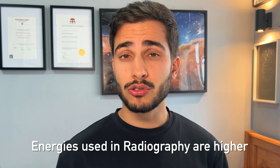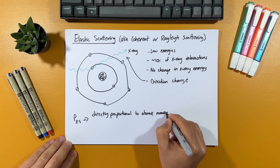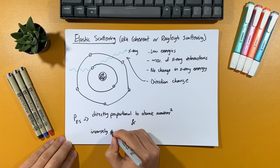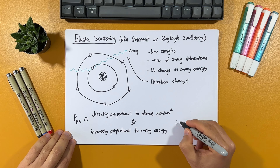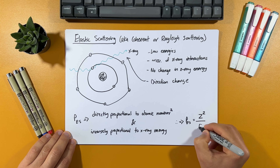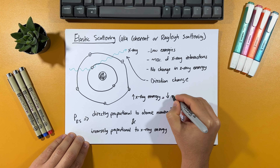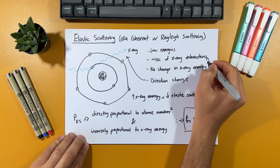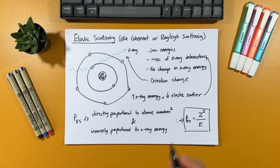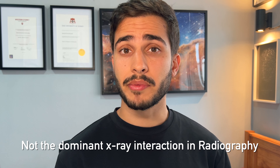Elastic scattering is not the major X-ray interaction in radiography because the energies typically used are higher. What's interesting is that the probability of it occurring is directly proportional to the atomic number squared — that is, it's exponentially more likely to occur with heavier atoms — but also inversely proportional to the energy of the X-ray photons. As energy increases, elastic scattering becomes less likely, and it dies down inherently, which is why it only accounts for about 10% of X-ray interactions.